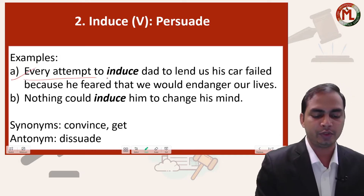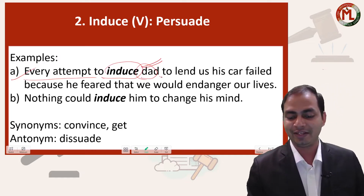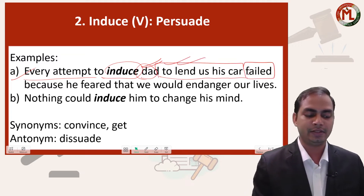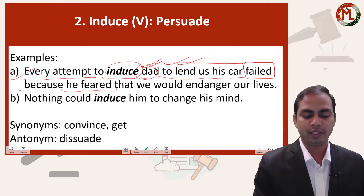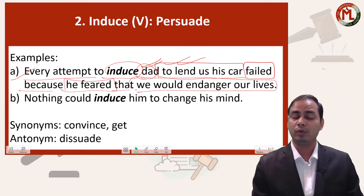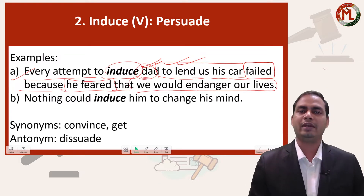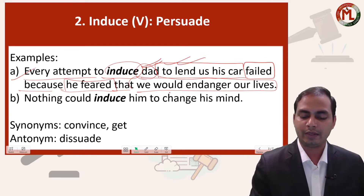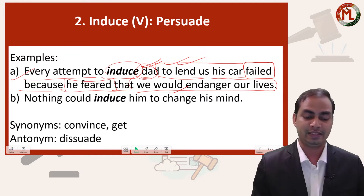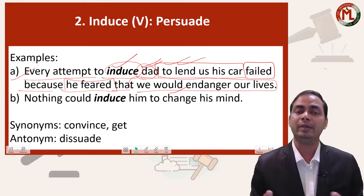For example: every attempt to induce dad — paapa ko mana rahe hain — to lend us his car failed, because he feared we would endanger our lives. Toh paapa ko hamari zindagi ki chinta hai and that is why unhone car nahi di, kyunki unhe lagta hai ke agar hum car drive karenge to khatre mein aa sakte hain. So 'induce' here means they were trying to persuade their father to give them his car.